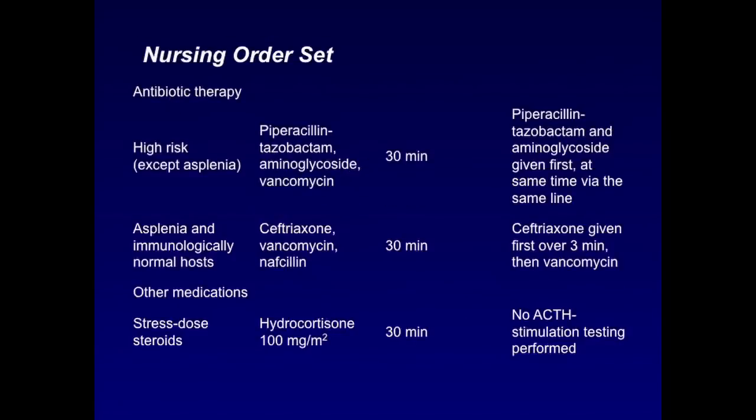The antibiotic therapy nursing order sheet depends on the patient. If they're high risk, they use piperacillin-tazobactam, aminoglycoside, and vancomycin, and they gave it within 30 minutes with piperacillin-tazobactam and aminoglycoside given first, at the same time by the same line. For asplenia and immunologically normal host, they gave ceftriaxone, vancomycin within 30 minutes, with ceftriaxone given first over three minutes and then vancomycin. And in addition, the doctor should assess whether the patient's at risk for adrenal insufficiency, in which case the nursing order set can include stress dose steroids, hydrocortisone. No ACTH stimulation should be performed. So the important thing to notice in all these order sets is everything is done within the first hour. Next slide, please.